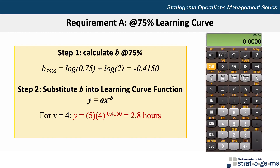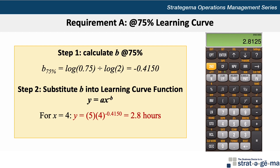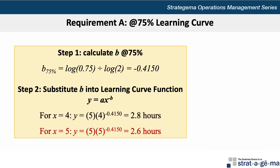Using the calculator, enter 5 times, open parenthesis, 4, then press the yx button for the exponent function, then recall (RCL) 1 to recall the calculated value of b stored in memory block number 1. Close parenthesis, and press the equal sign, and you should get the correct answer. For x equals 5, or the fifth installation, y equals the 5-hour initial installation time multiplied by 5 to the exponent of negative 0.4150, which equals about 2.6 hours rounded.